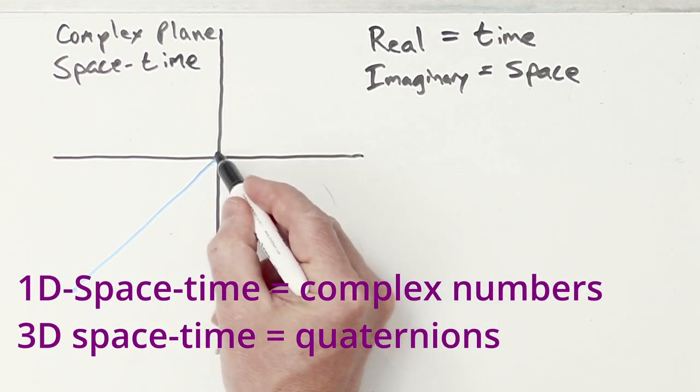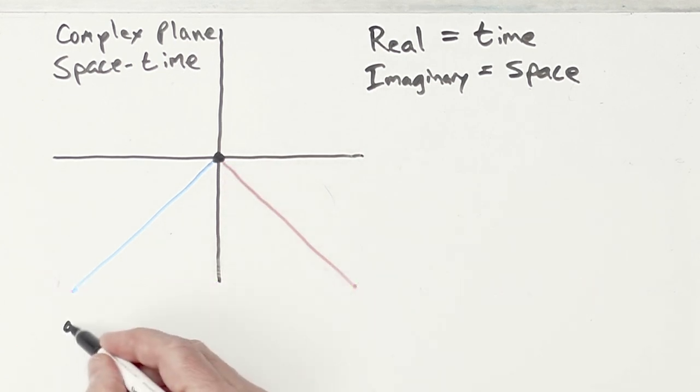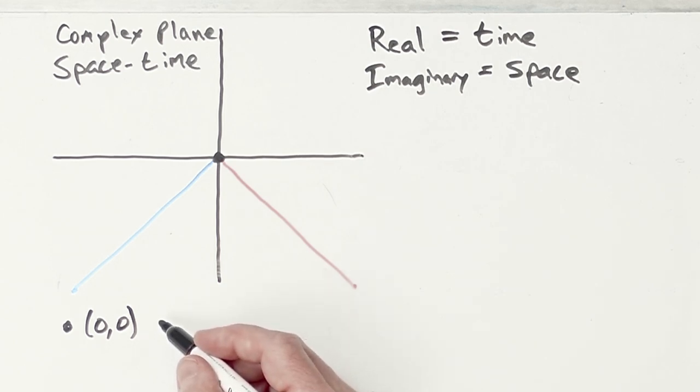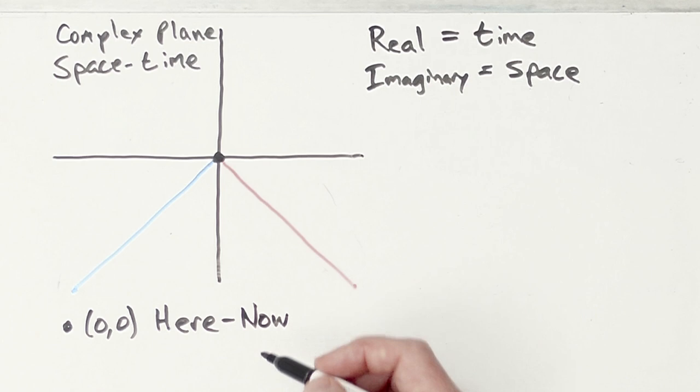Let's start with the point right there, that point. Well, we know what it is. That's the origin. That's (0,0). But now it actually has a name. It is in the location here because it's neither right nor left. And in terms of time, well, it's not the future. It's not the past. It is now. It is here now.